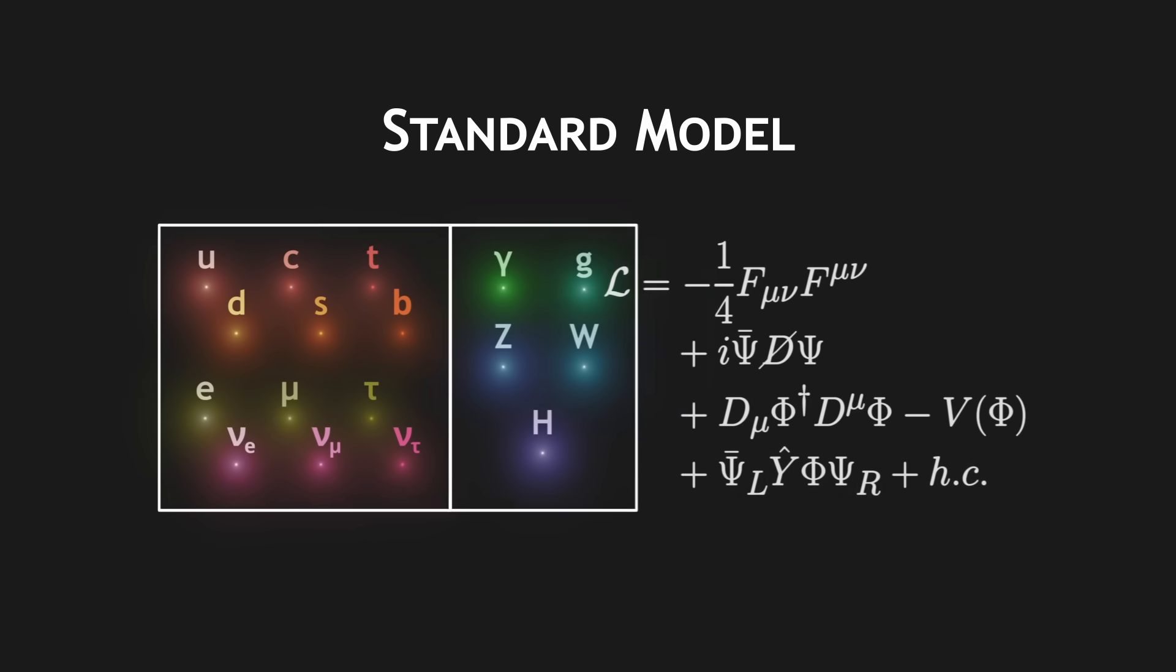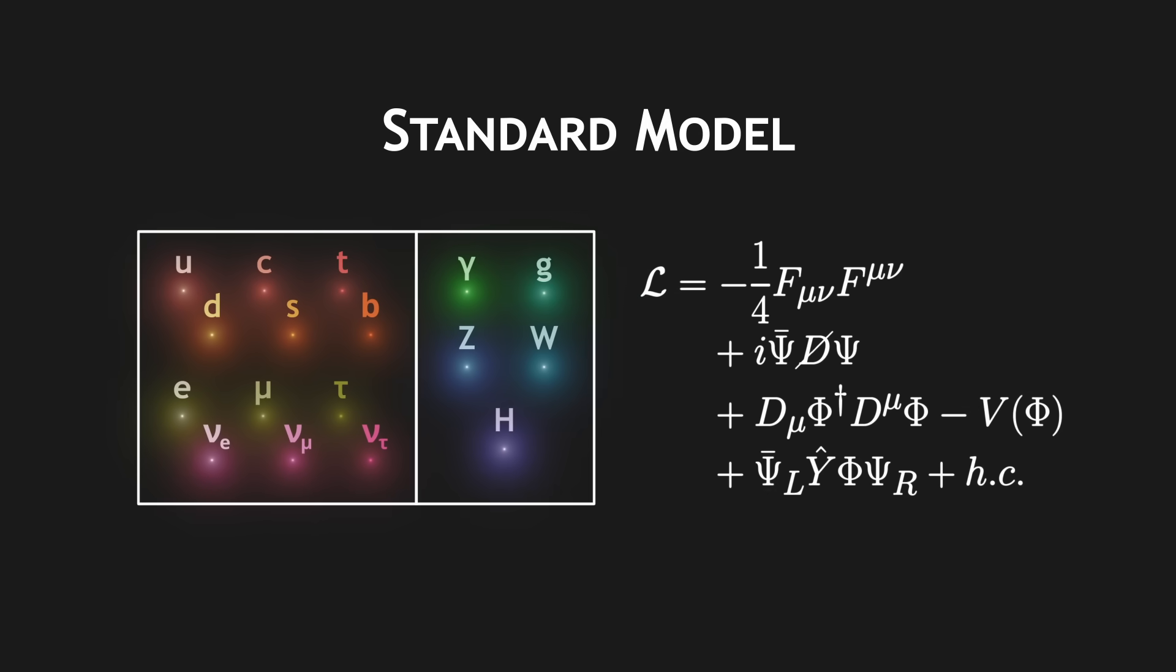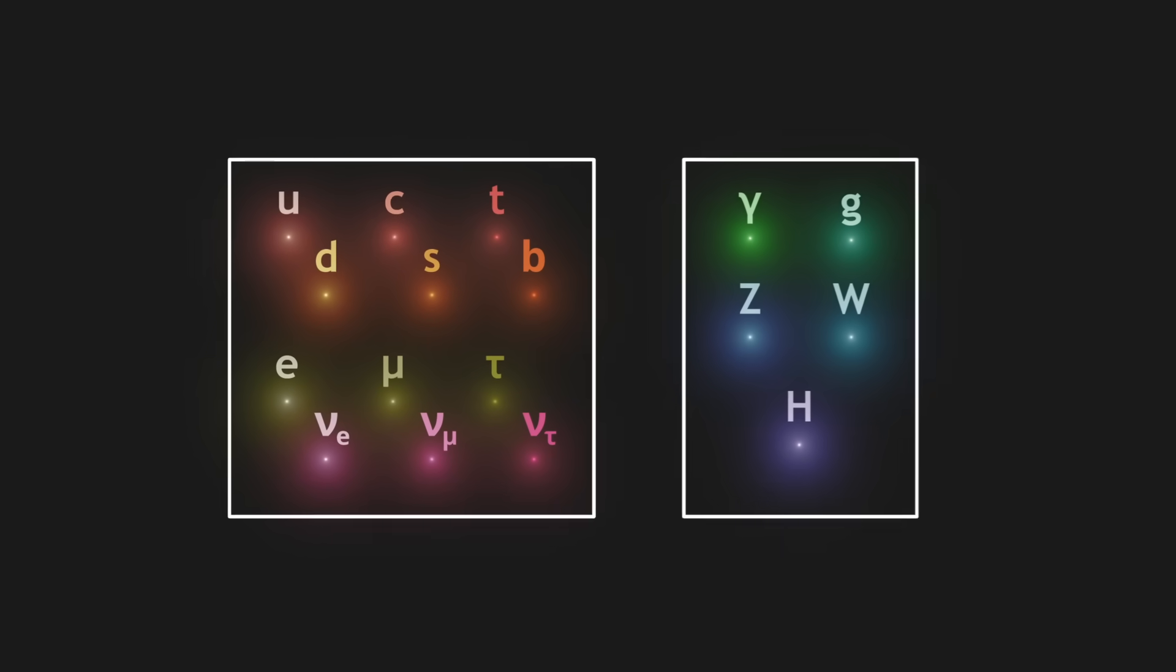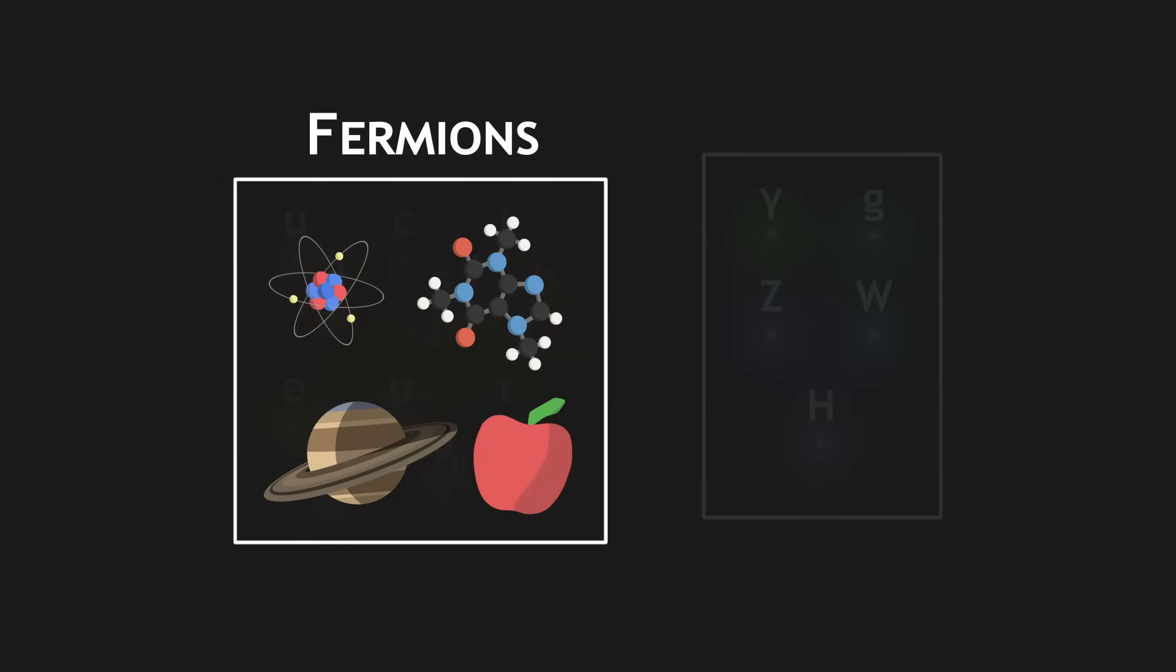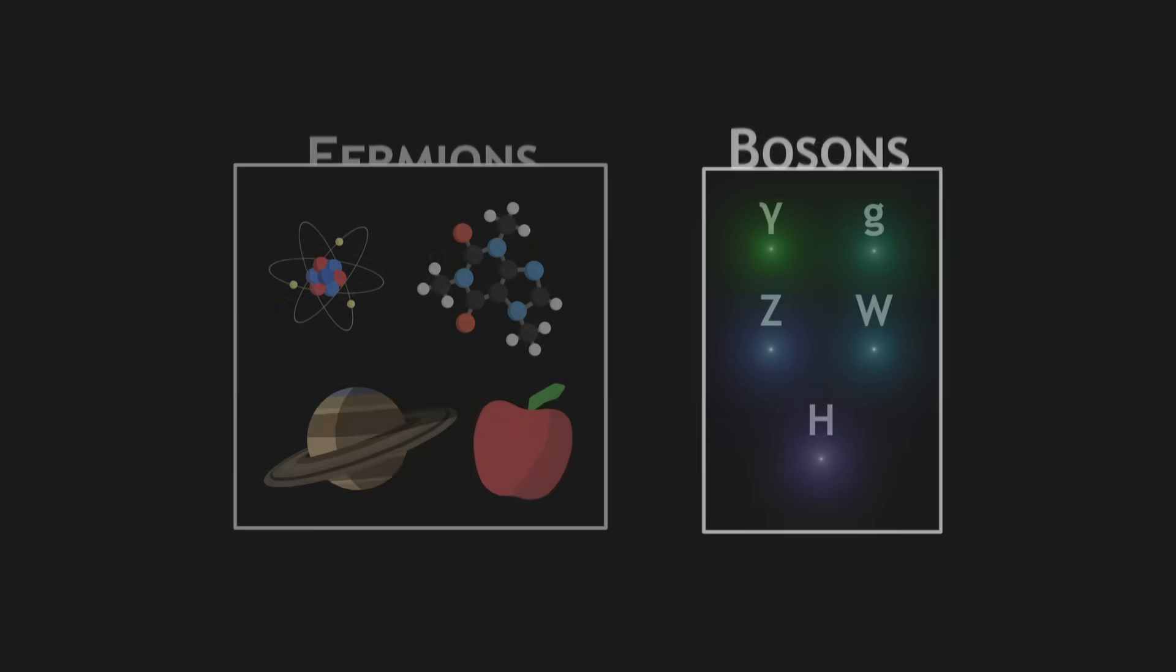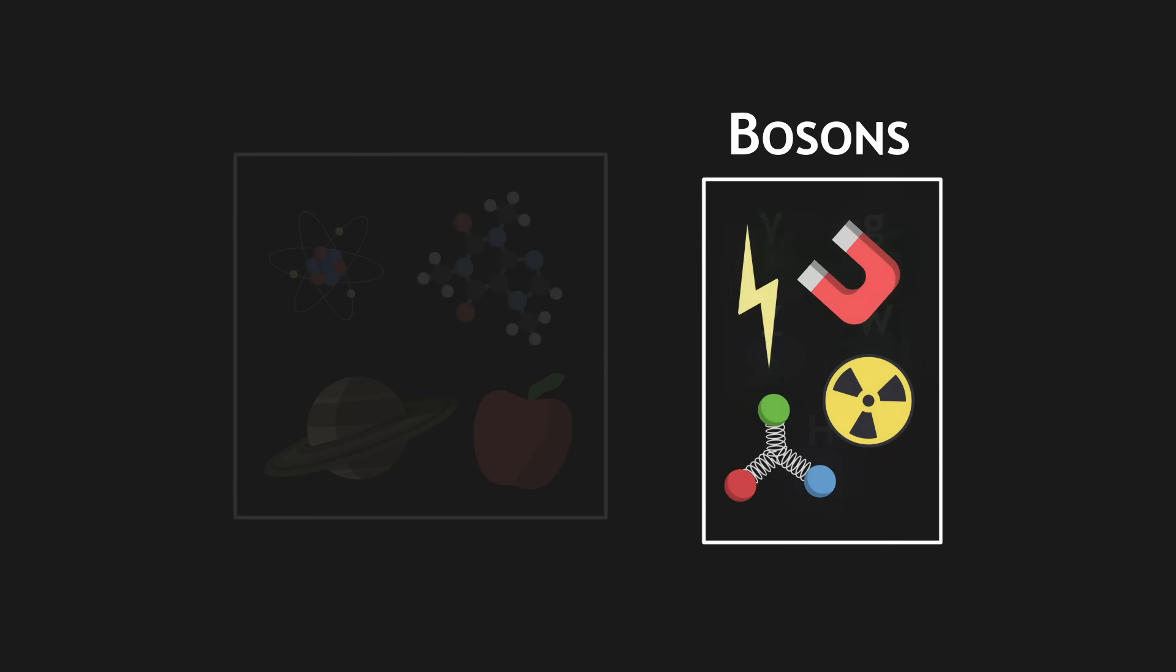All these different particles are accounted for in what we call the Standard Model. It contains two main categories of particles: fermions, which mostly constitute matter, and bosons, which mostly describe interactions.